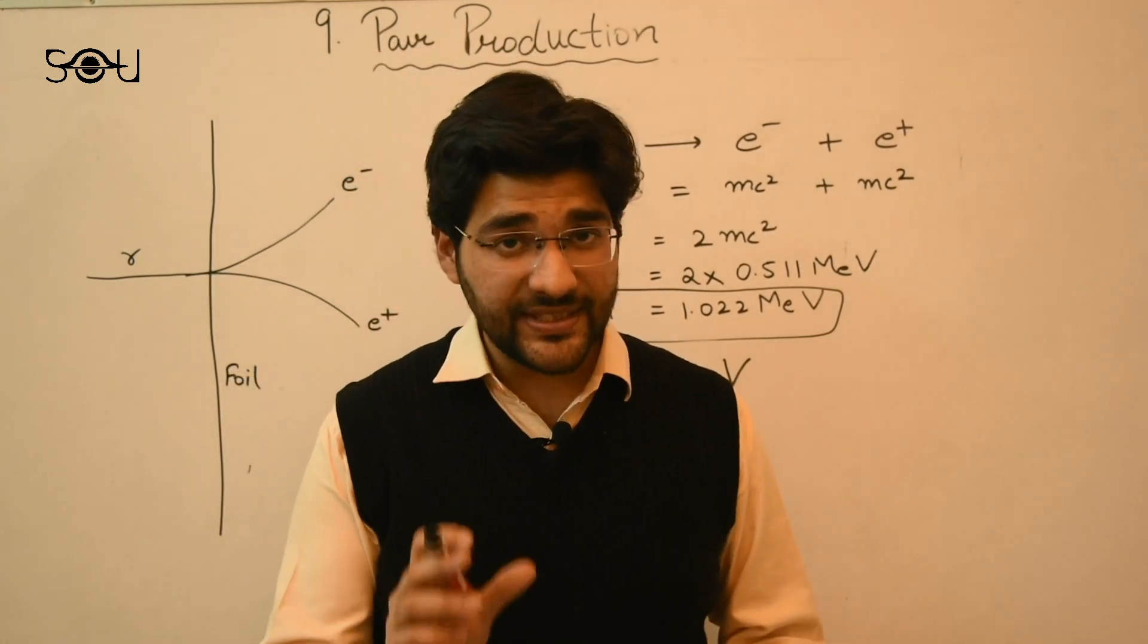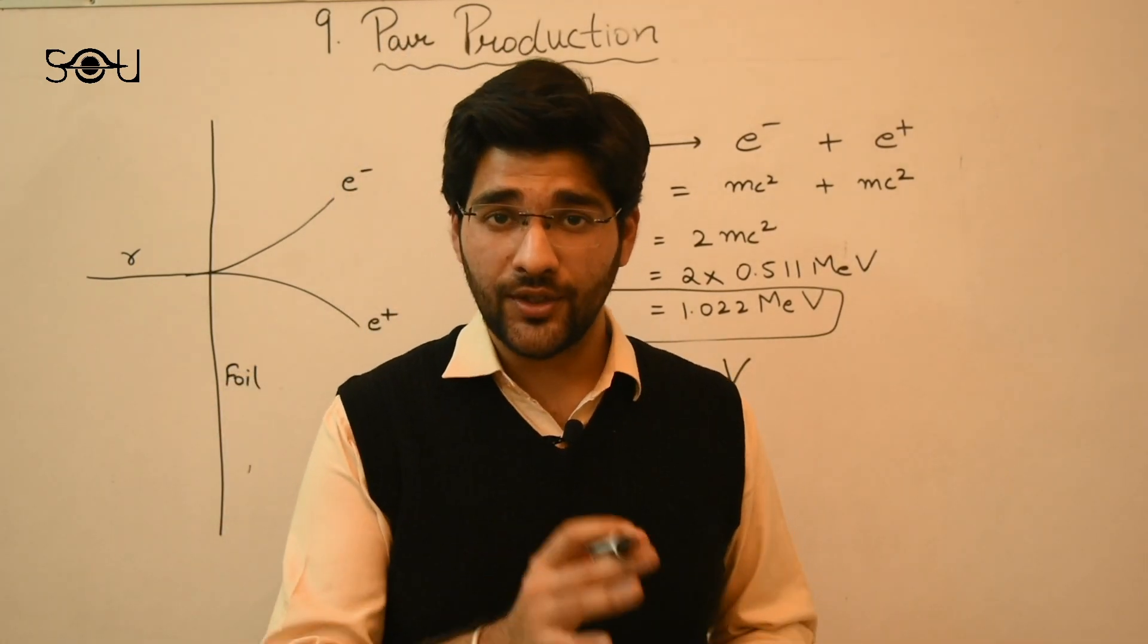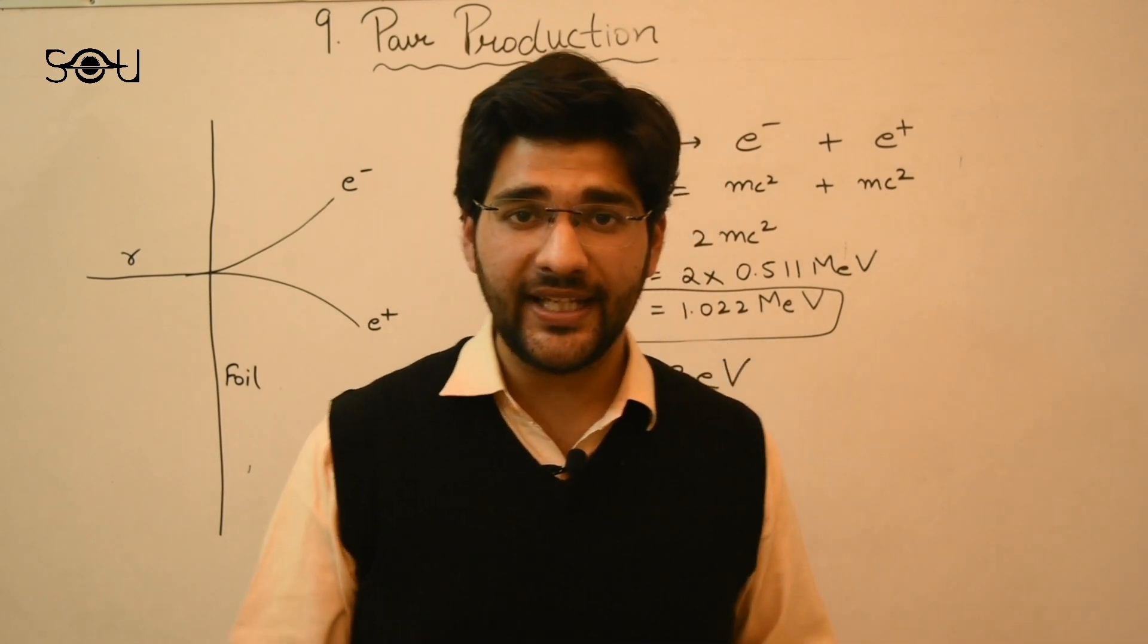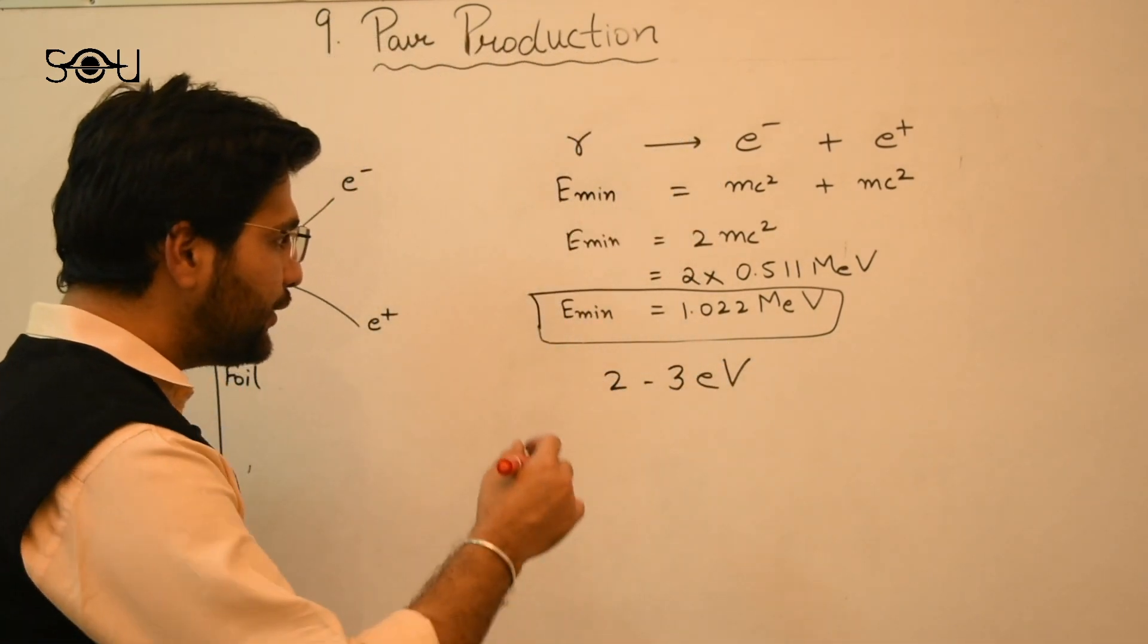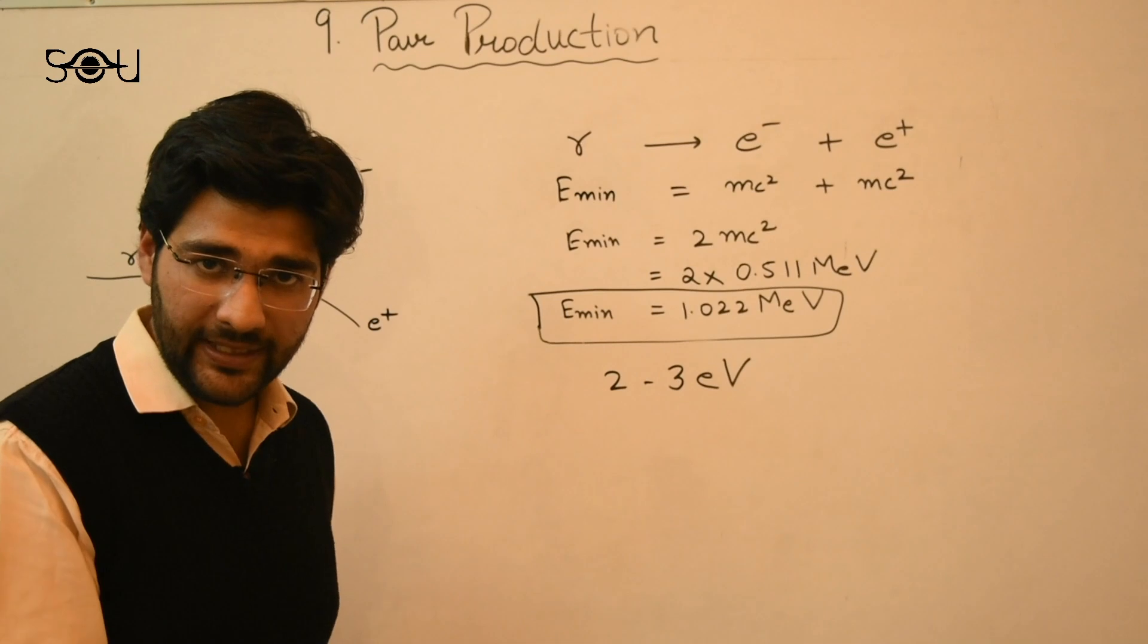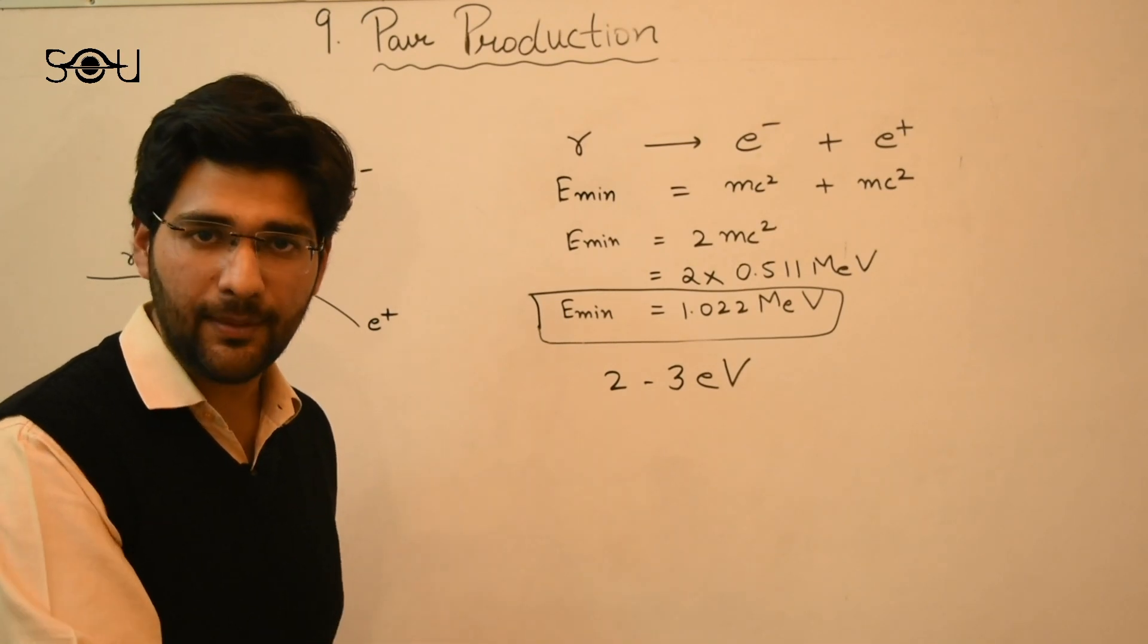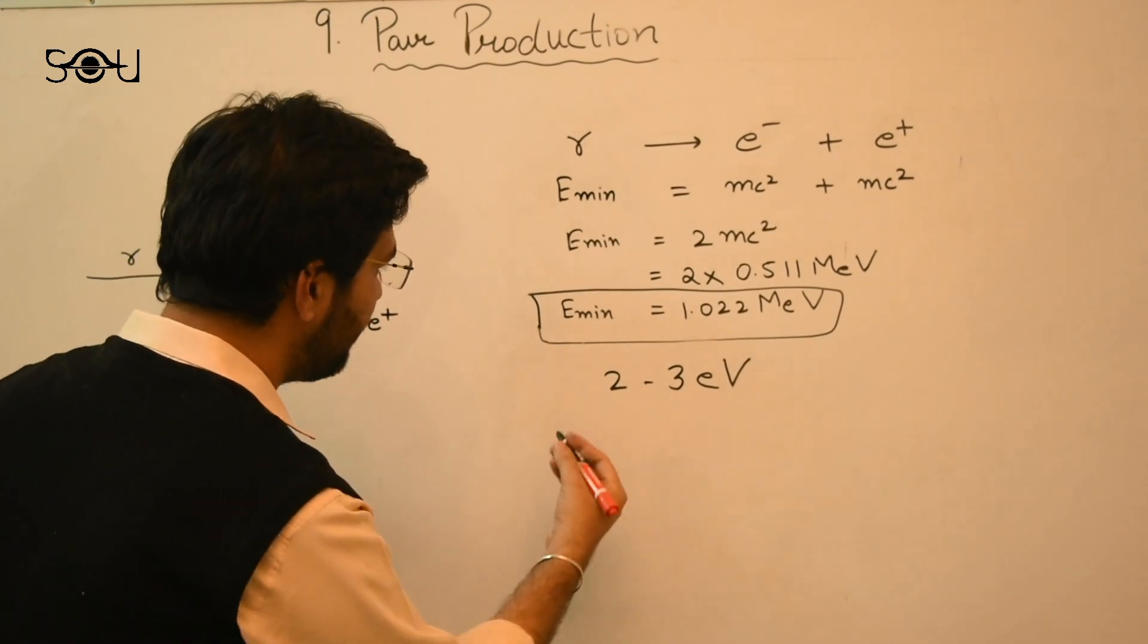So this is the reason why visible ray photons cannot cause pair production. They cannot produce the electron and positron pairs. You can also calculate the wavelength and the frequency of the gamma rays that is required, the minimum wavelength.